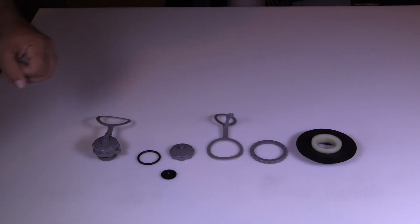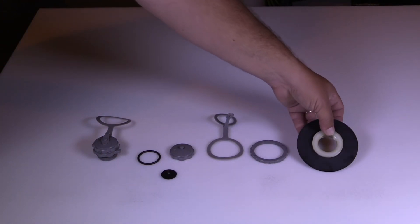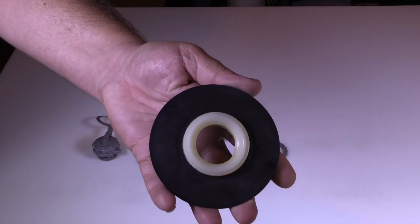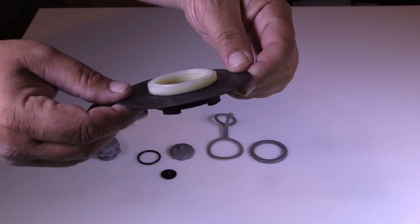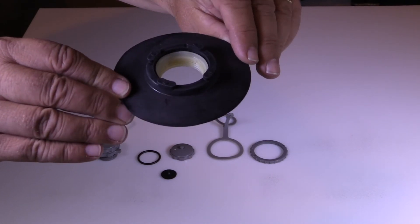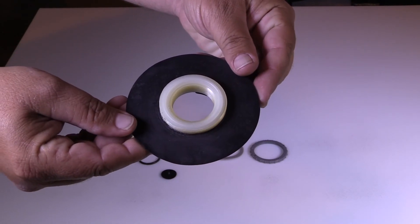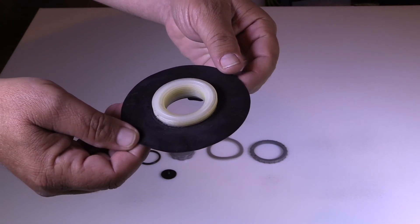So this is the Achilles valve system. This is the rubber base that's glued into the boat itself. This can't be replaced by an individual, it has to be replaced by a repair facility.